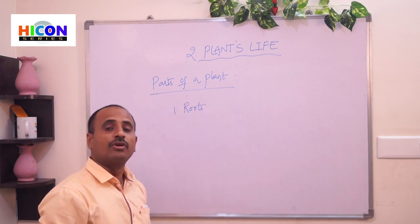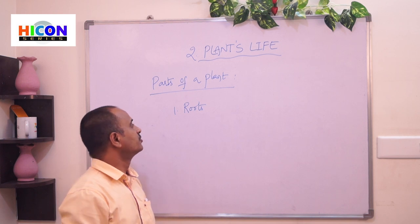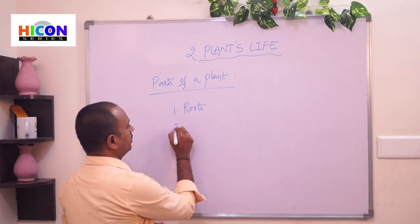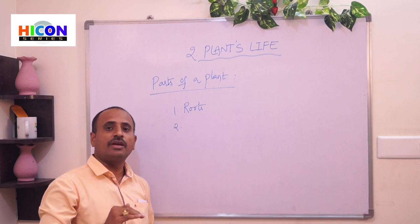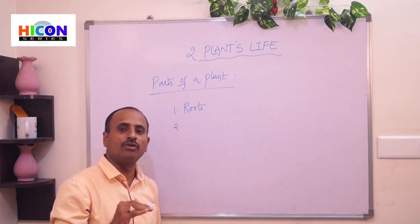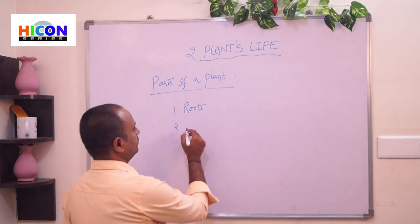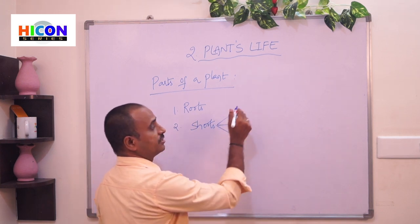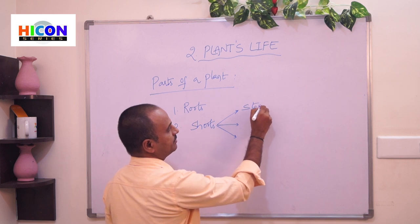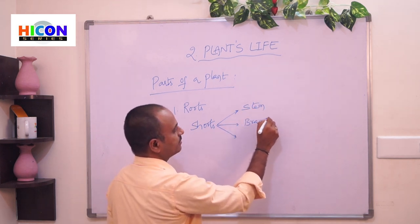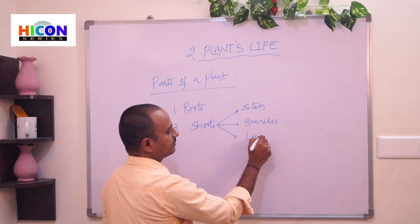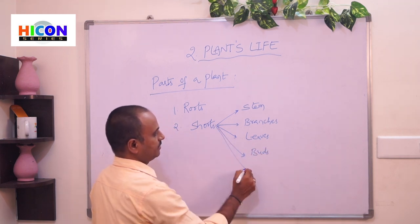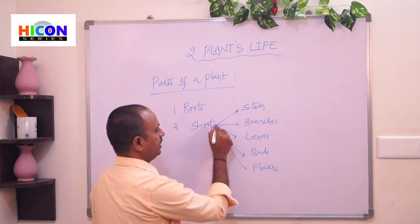The roots will grow under the soil and hold the plant firmly in the soil. The remaining part of the plant which grows above the soil is called the shoot. This shoot contains stem, branches, leaves, buds, flowers, and fruits.